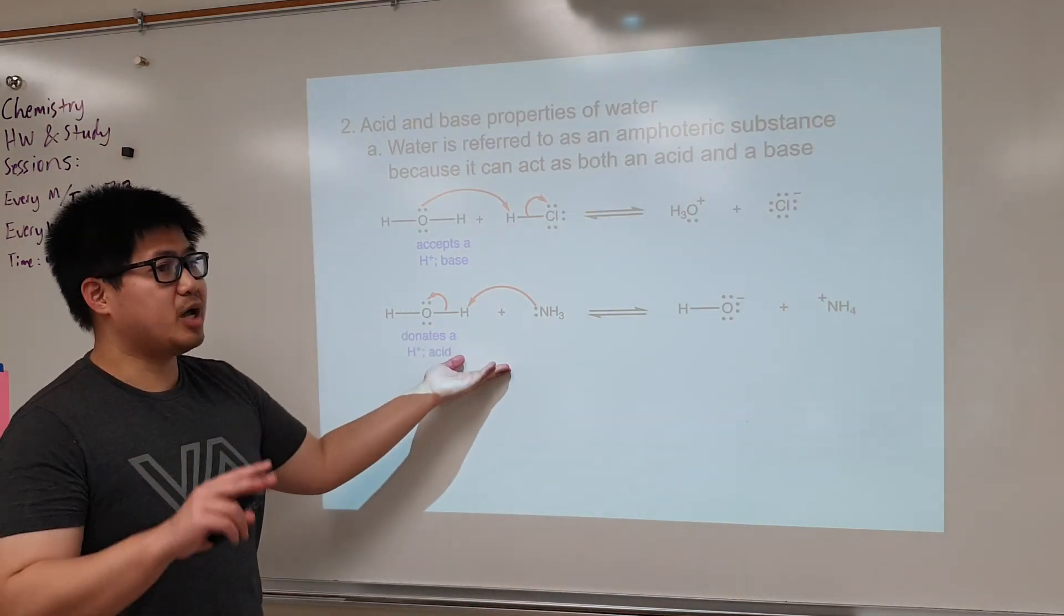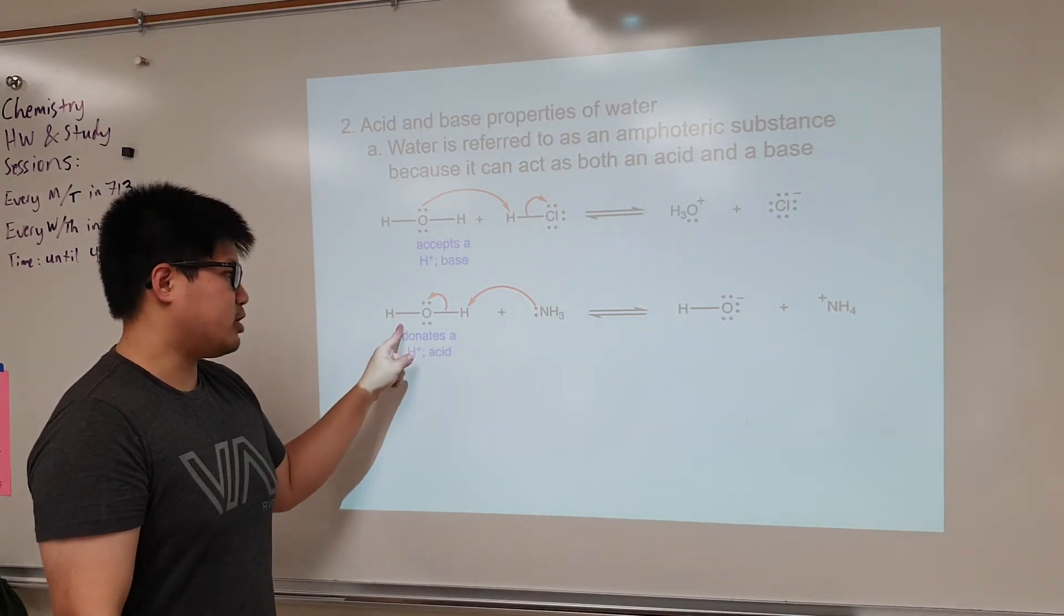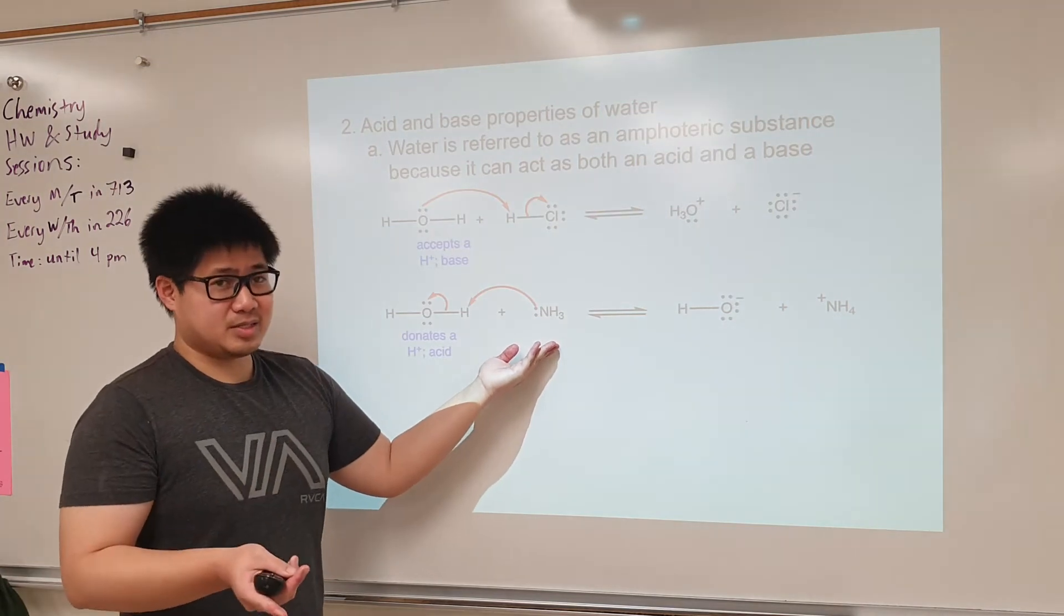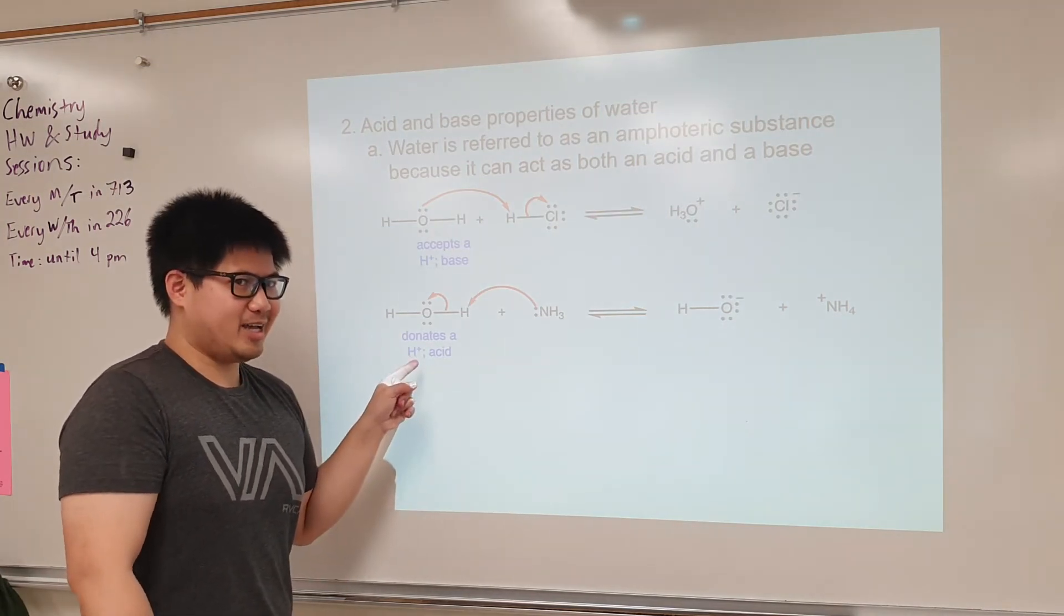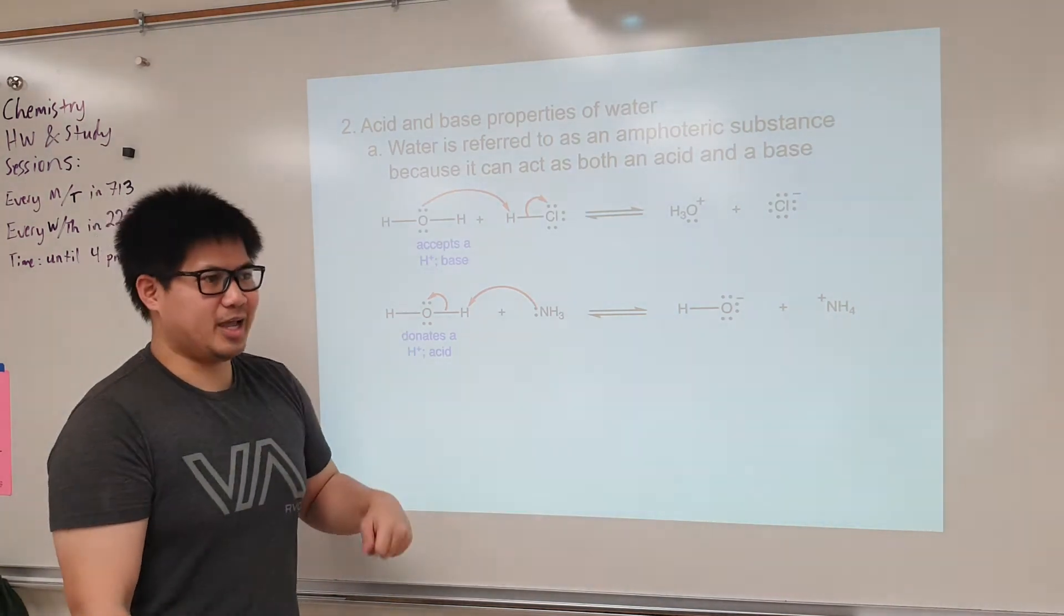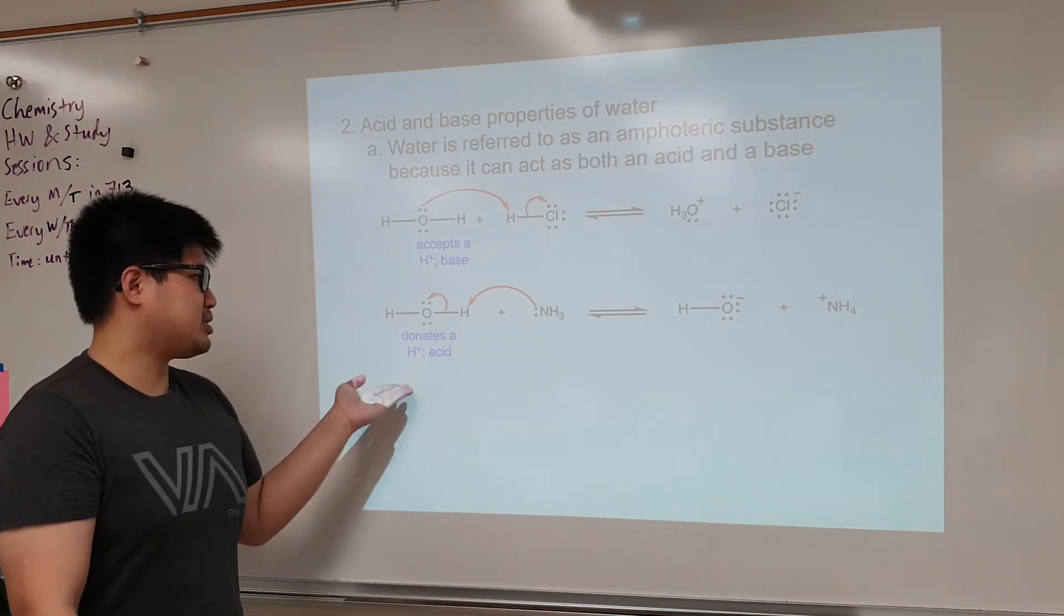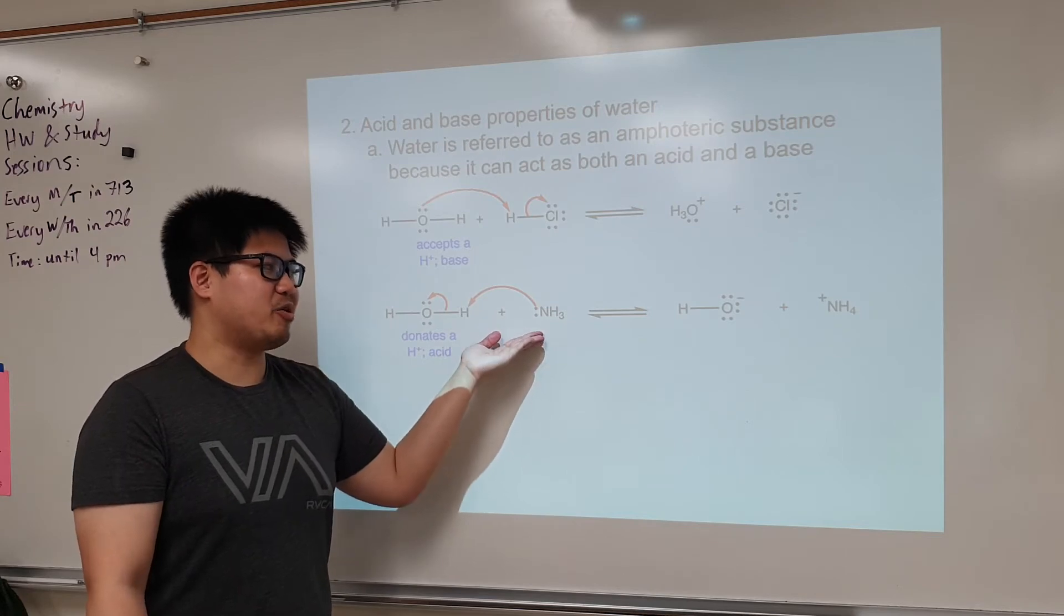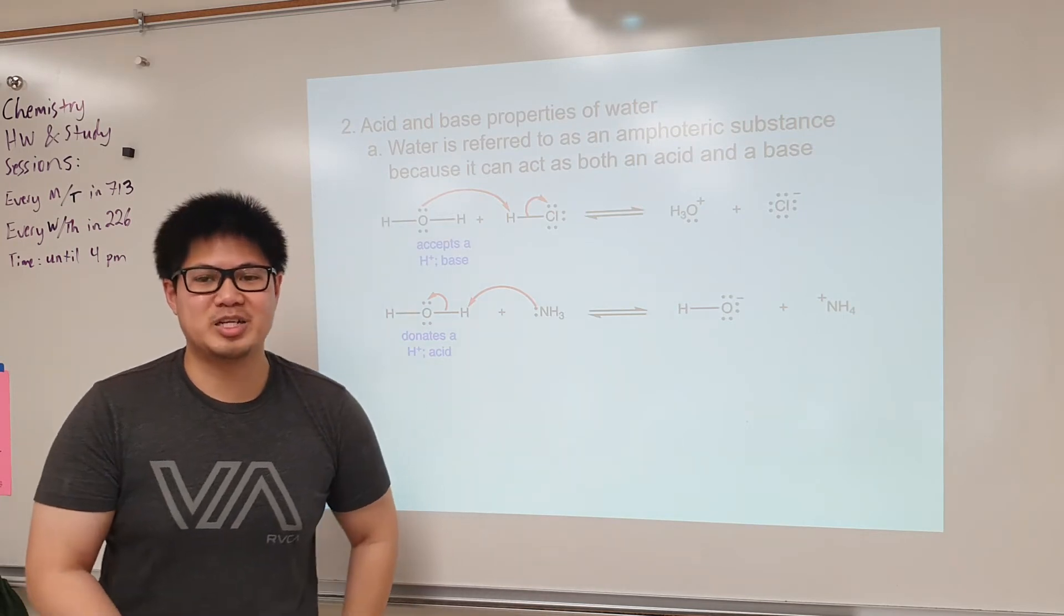Here's another example, but reacting with a base this time. This is water reacting with ammonia. Last time we checked, ammonia is a base. If ammonia is a base, water should act as an acid. Water is going to donate its proton next. That proton is now going to enter into ammonia, turning that into ammonium. And now we have hydroxide, OH-.